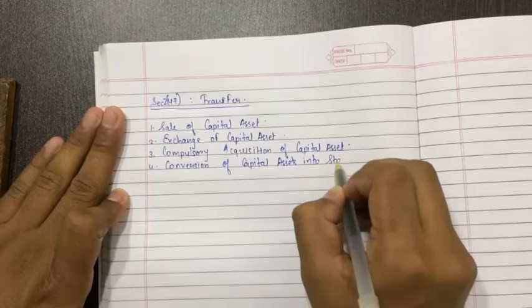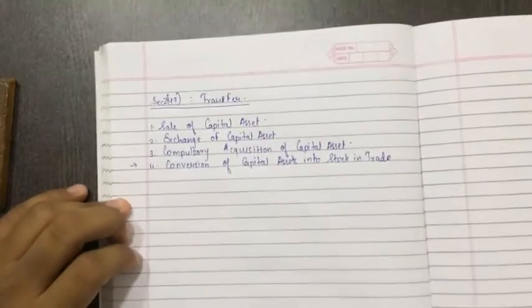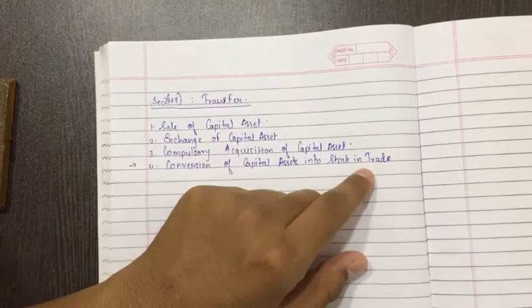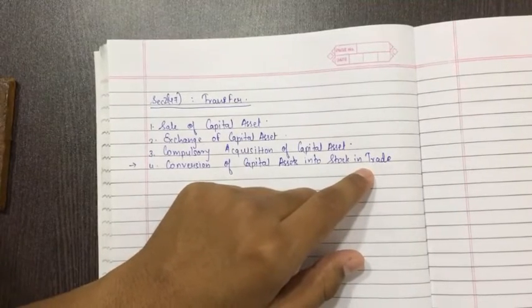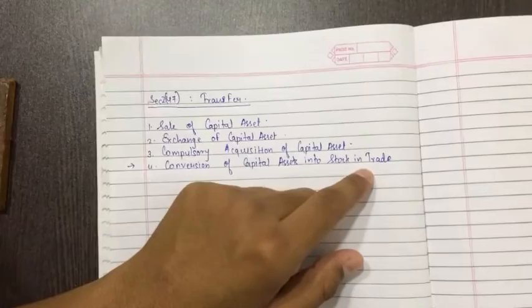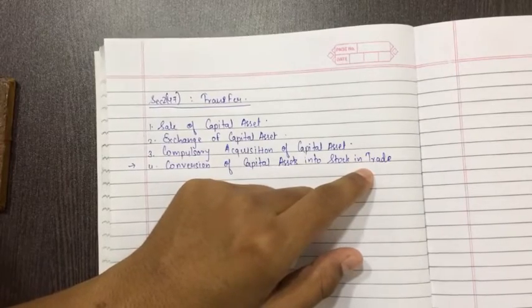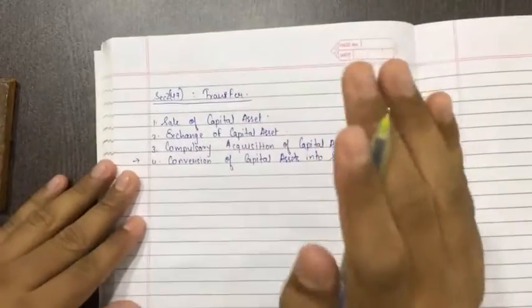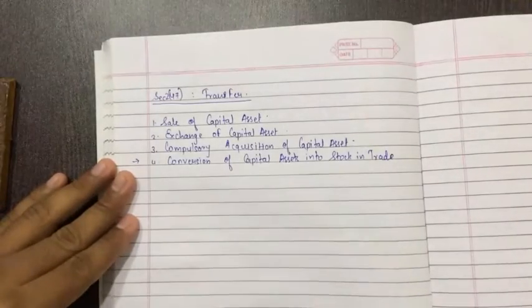Fourth, conversion of capital assets into stock and trade. People were asking for this only. Many have commented to please upload the remaining section because there is a sum in the practice manual on this, but it didn't come in the exam. I am feeling so bad. Capital gain sum used to come for 8 marks, house property sum used to come for 8 marks. Salary has not come, I was so shocked seeing the paper.